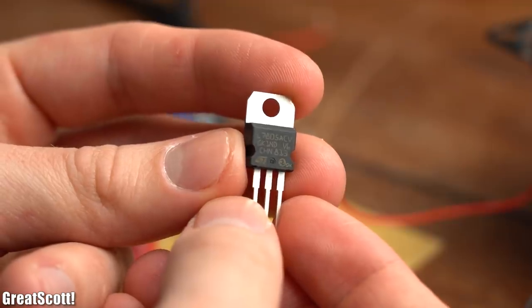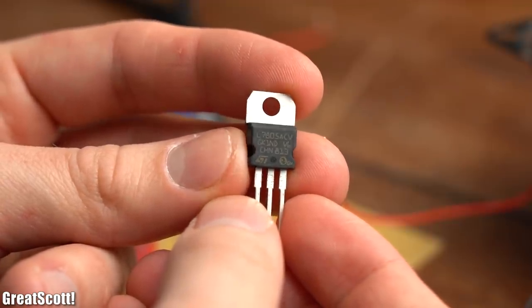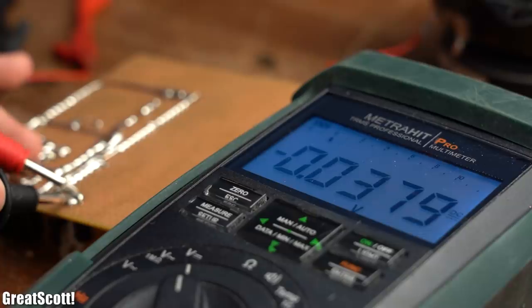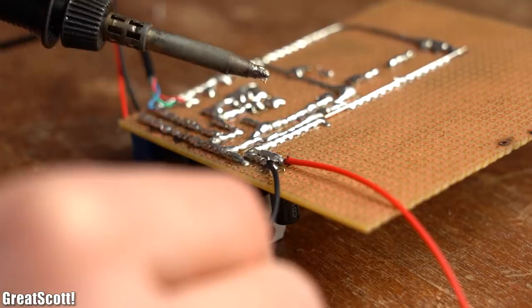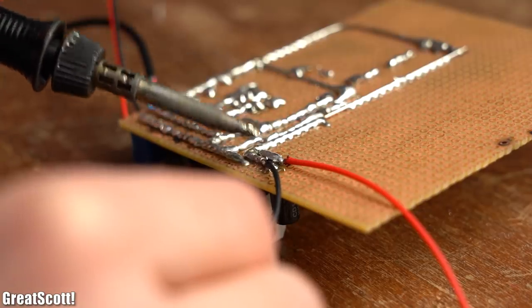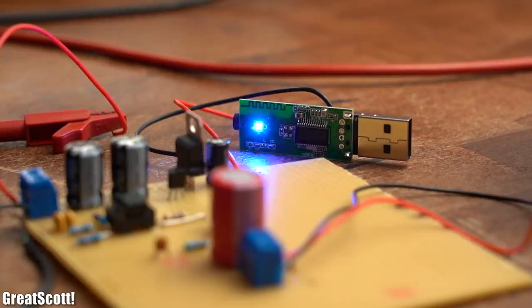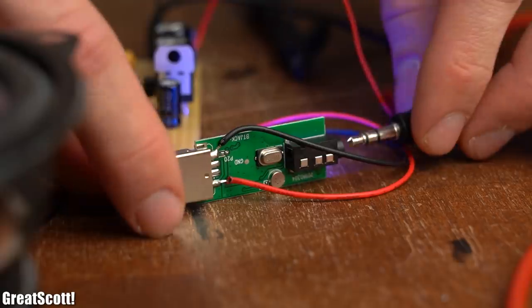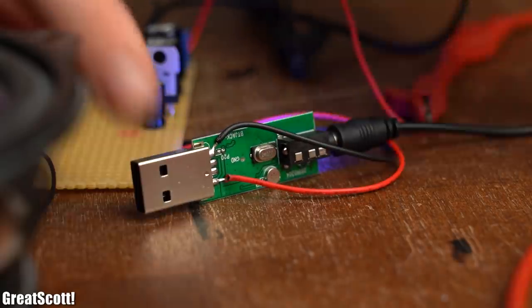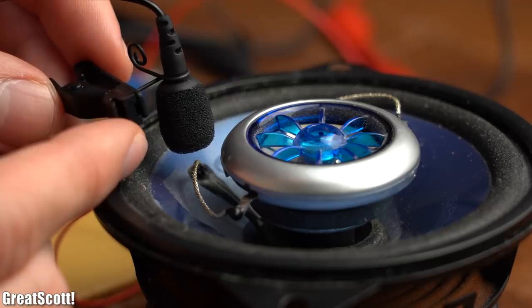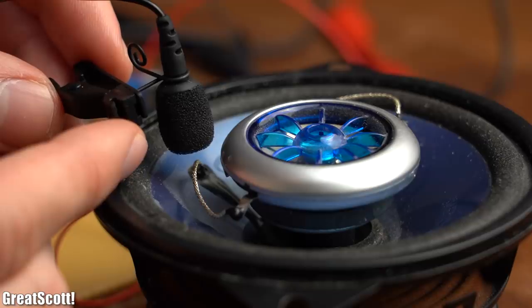So next I used the 5V linear regulator to step down the mandatory 12V amplifier voltage to 5V. This way I can hook up the Bluetooth music receiver to the same power source, and as you can see it works without any problems. But as soon as I connected the audio cable, you can clearly hear the interference sounds I was talking about earlier. So where do they come from?